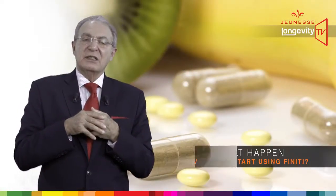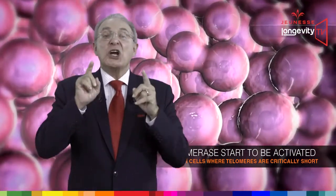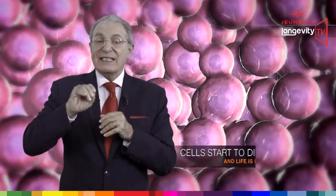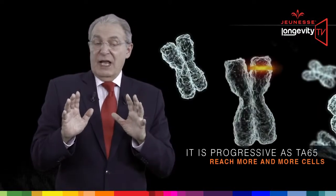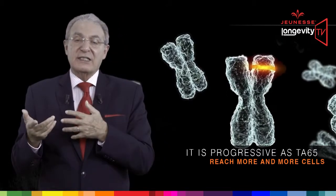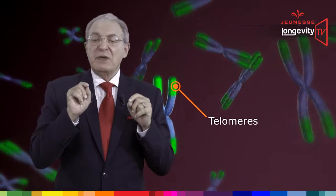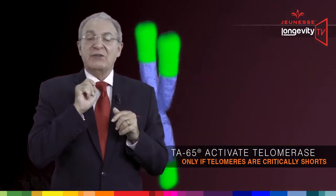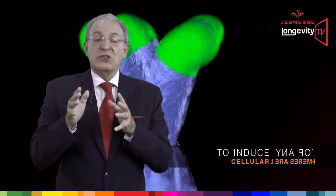So what happens when we start using Finiti? After taking Finiti, telomerase starts to be activated in cells where telomeres are critically short. At the moment when telomeres are longer than 5,000 base pairs, cells start to divide again and life is back in those cells. It is progressive, as TA-65 reaches more and more cells, and if you take it on a regular basis, the process of cell rejuvenation will start. The good news is that TA-65 has a so-called transient effect, which means it will activate telomerase only if telomeres are critically short, and will stop any effect when telomeres are long enough to induce cellular division.